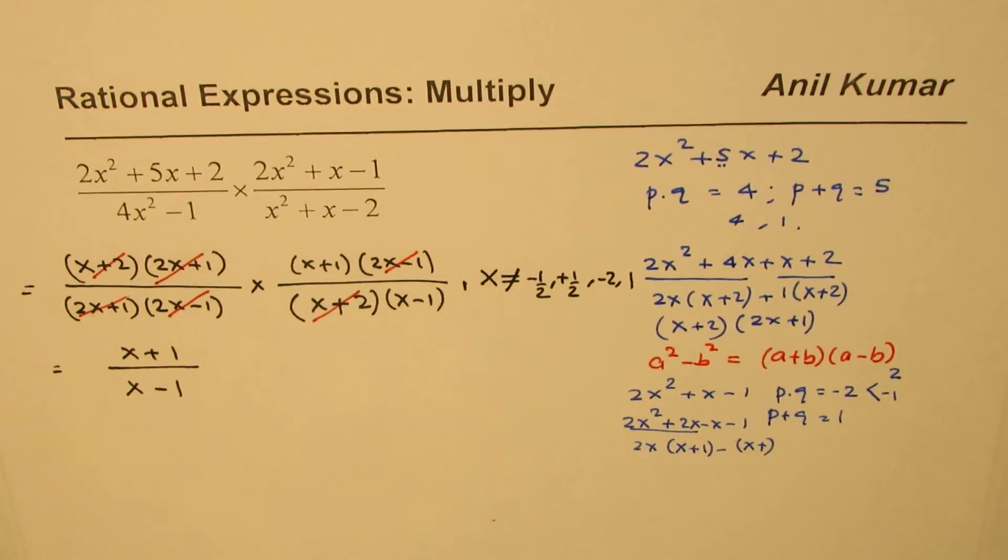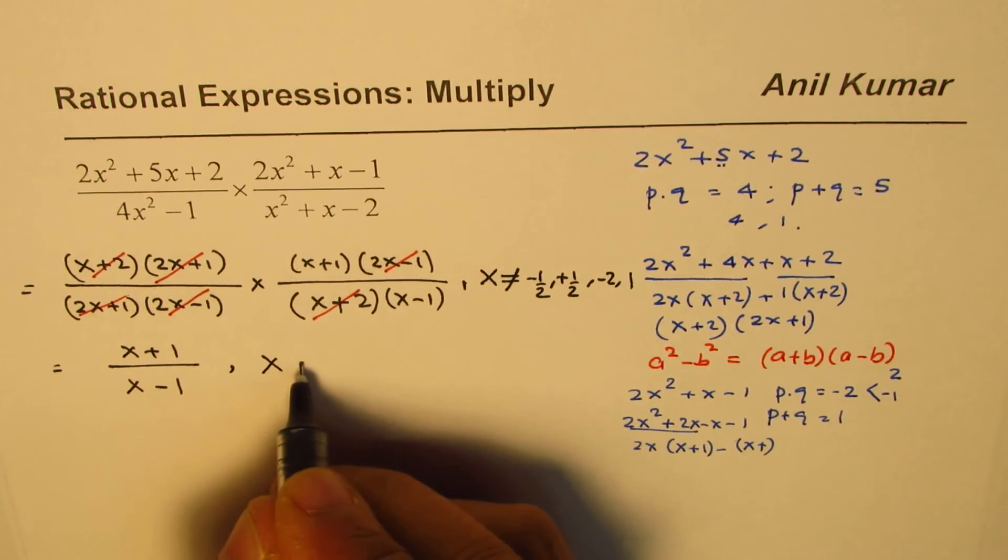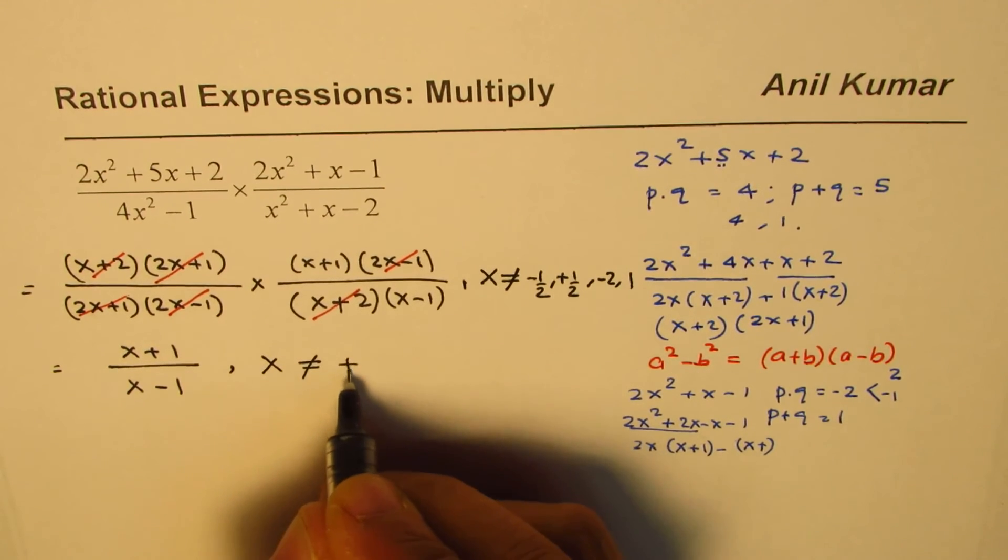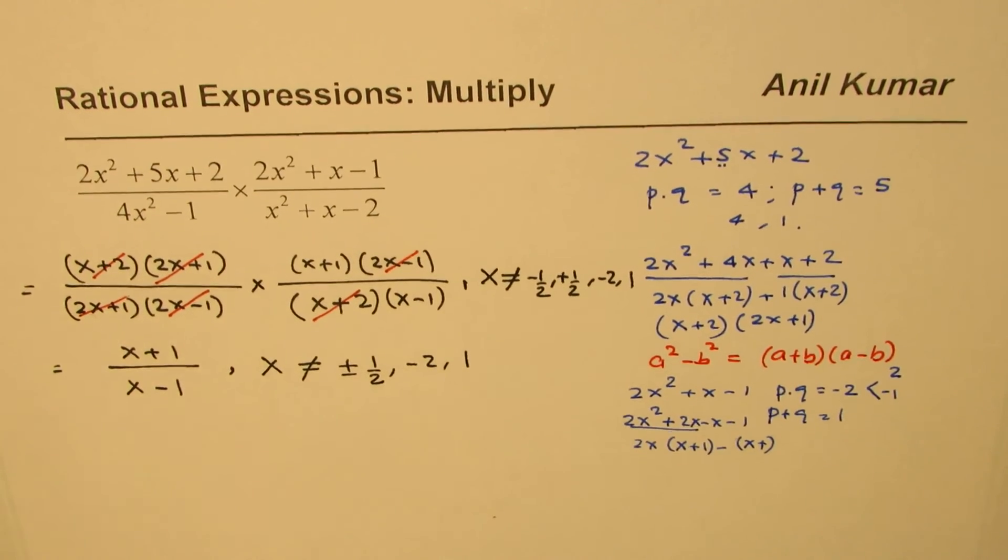So, that becomes a simplified form of the rational expression. Don't forget to write the restrictions, which is x should not be equal to plus minus half, and it's not equal to minus 2 and 1 also.